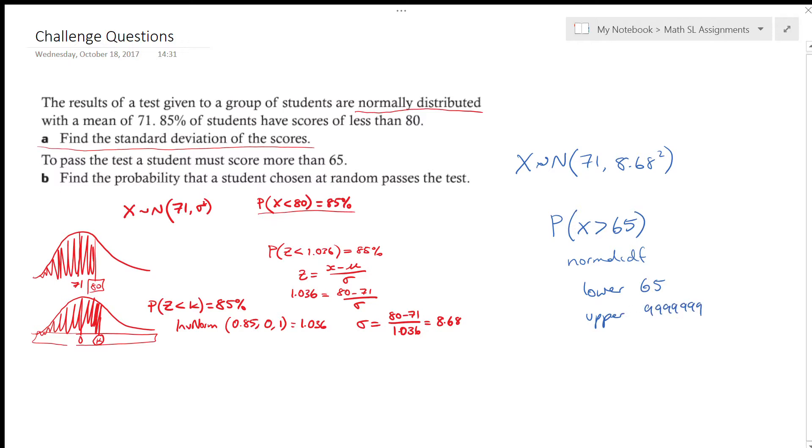You might do 9 times 10 to the 99. We have our mean of 71 and a standard deviation of 8.68.